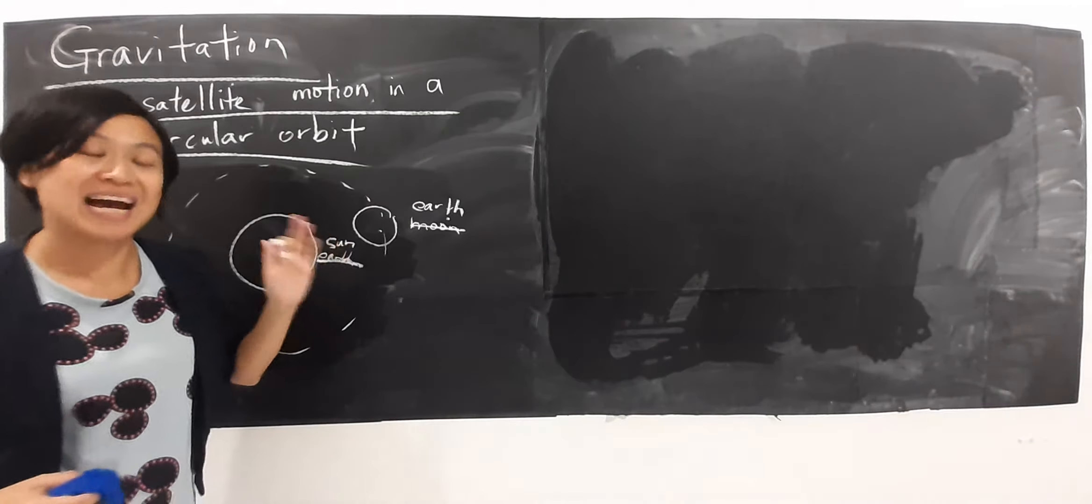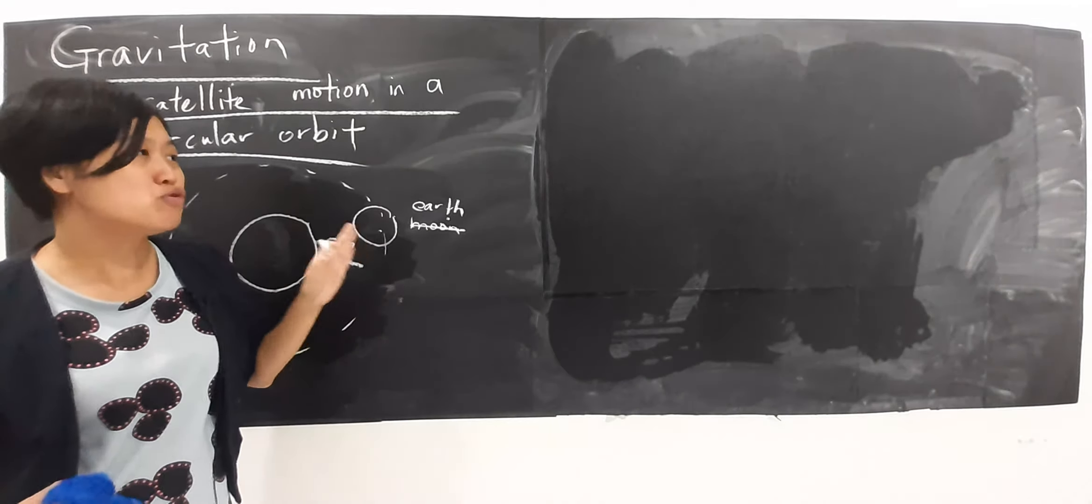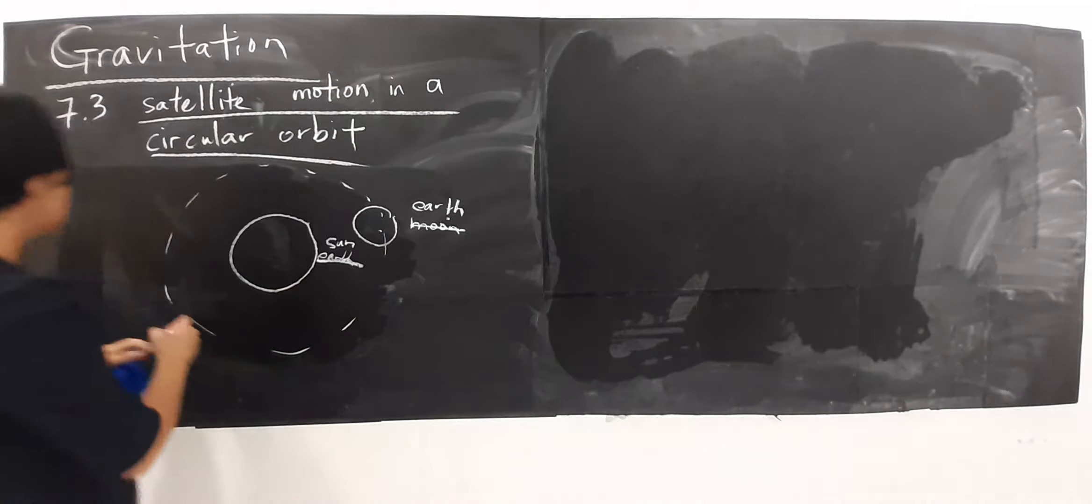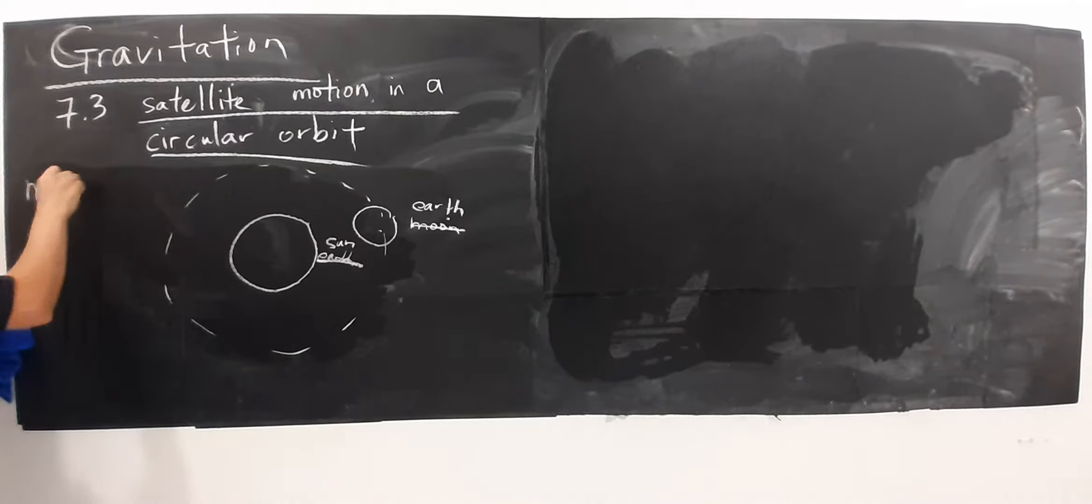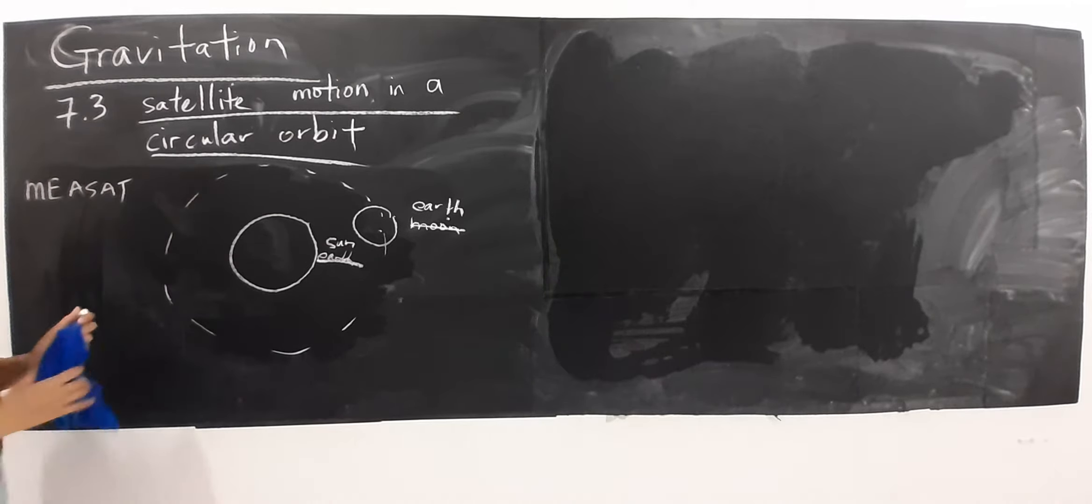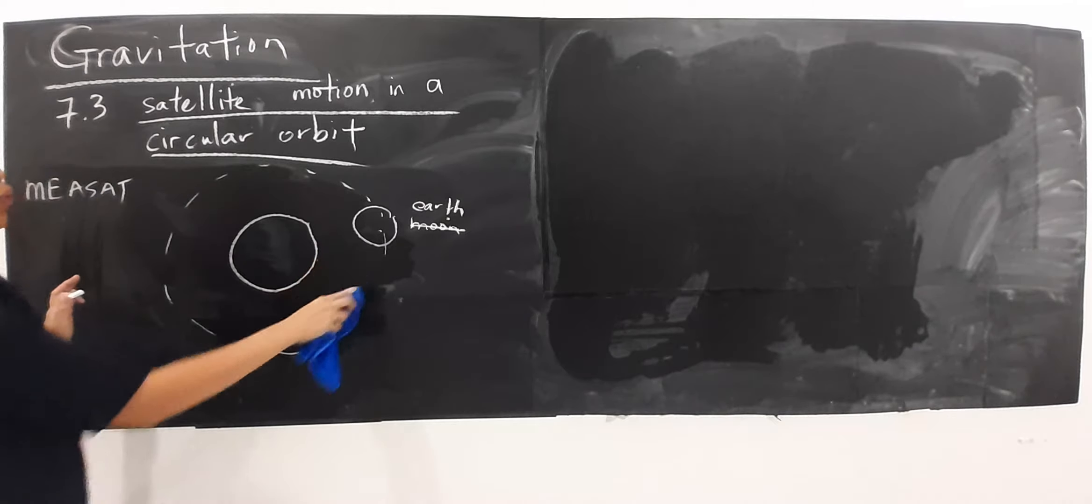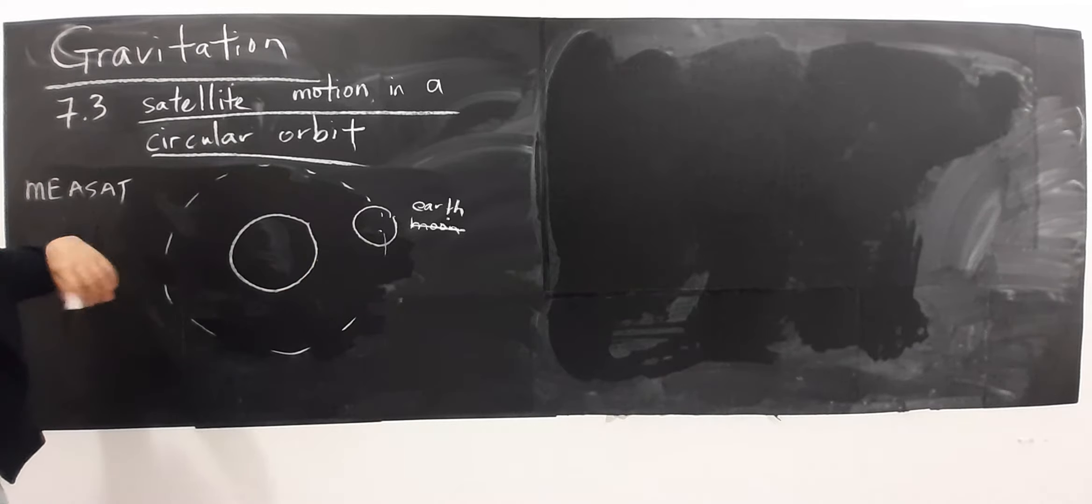We not only have natural satellite, we do have artificial satellite. For example, Malaysia has a satellite where we call this name. So this one is important for example for Astro to provide many TV programs for residents in several countries.